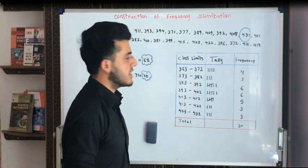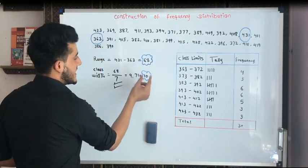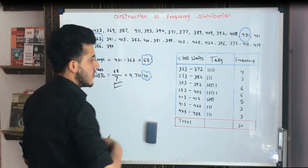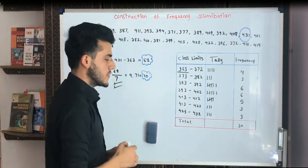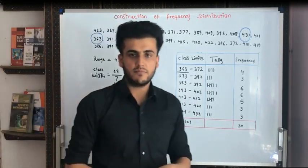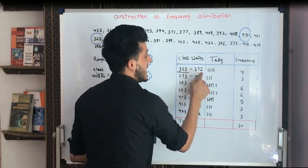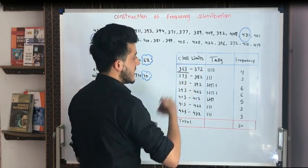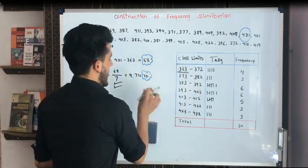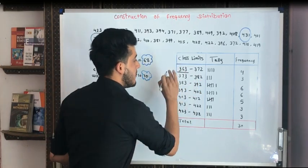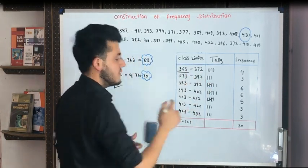Now we are constructing our class limits. Because our lowest value is 363 and our highest value is 431, we construct our class limits by adding 10 each time. So we are taking 363, 373, 383, 393, 403, 413, 423. And as it is the inclusive method, on the other side of each class limit, we put 372, because 372 is included here. Then we start from 373, going vertically. We found that we should construct 7 classes, so 7 classes with a difference of 10. Horizontally, we take one less: 372, 382, and continuously going on.